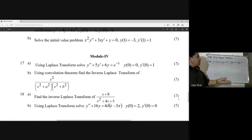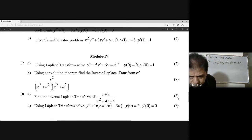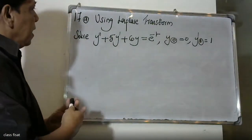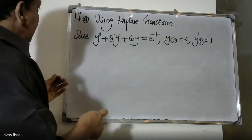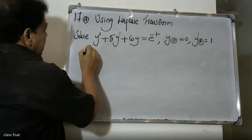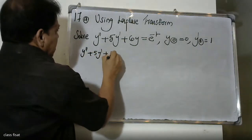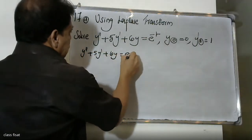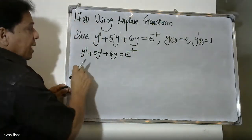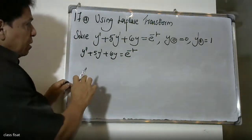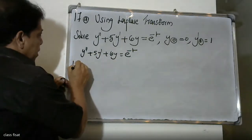So that's why we have question 17A. This is how we can do it. We have y double dash plus 5y dash plus 6y is equal to e raise to minus t. Then apply Laplace Transform on both sides.